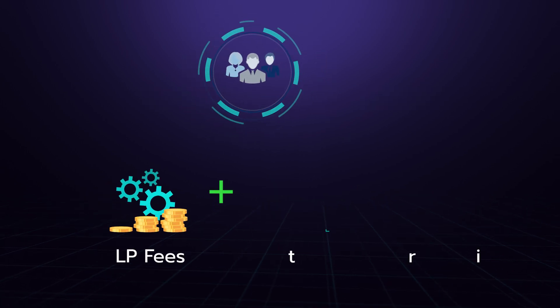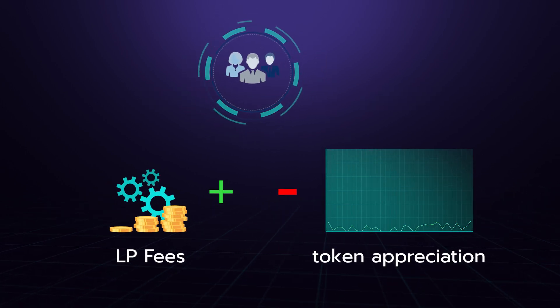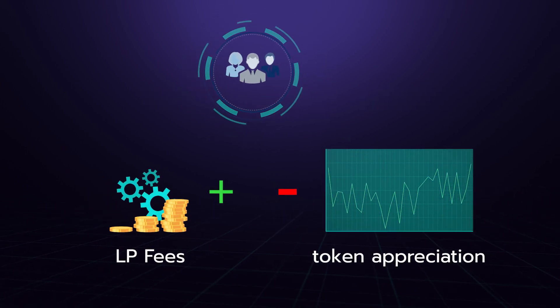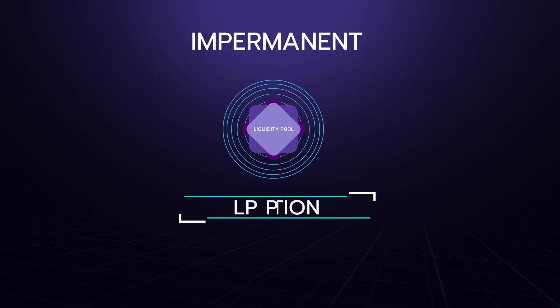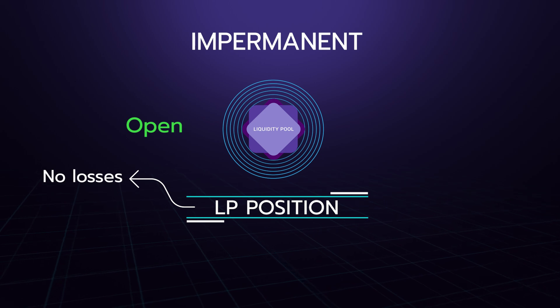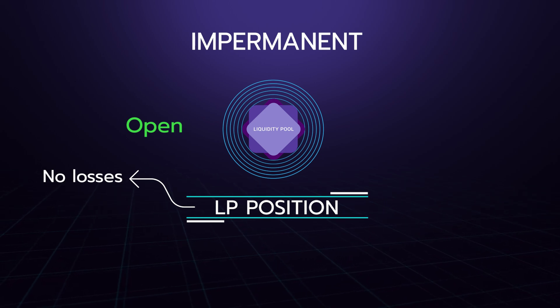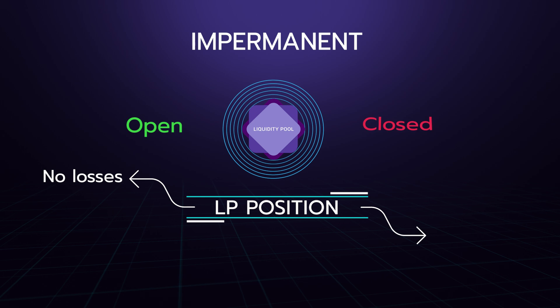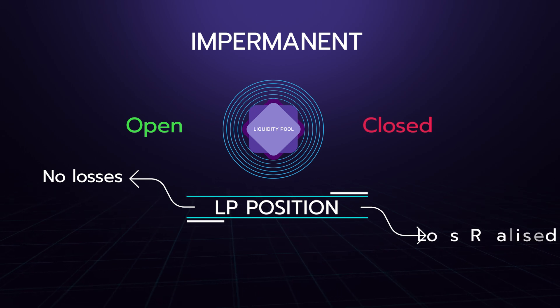It's called impermanent because while the position remains open, the loss is only on paper and could potentially correct itself in time. However, if the liquidity position is closed at that point, the loss would become realized.